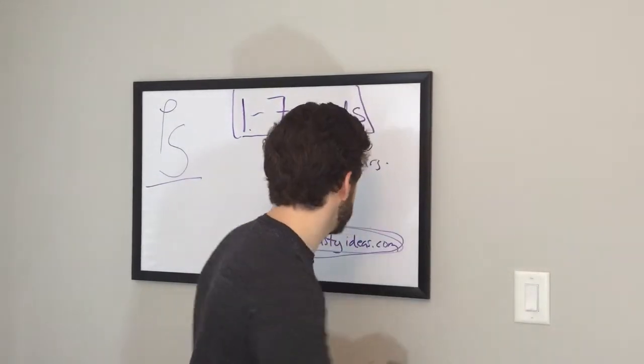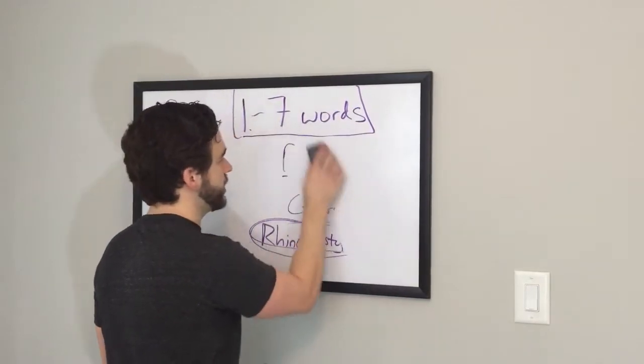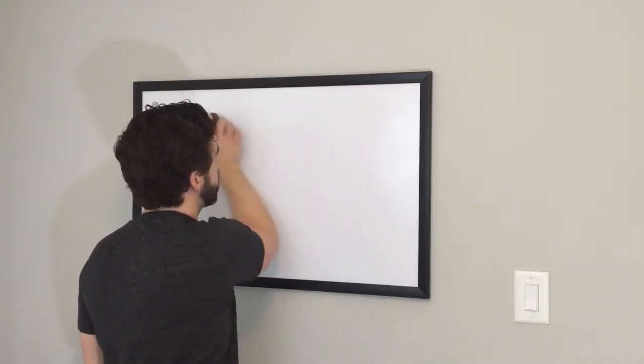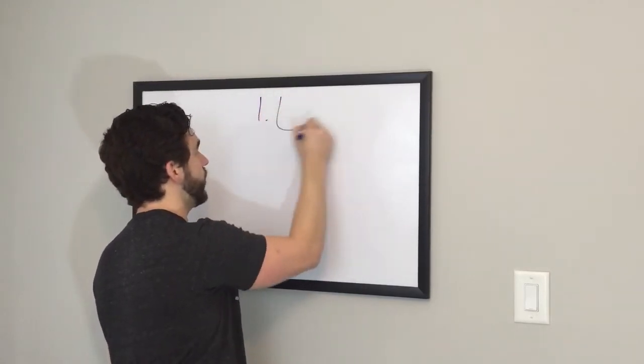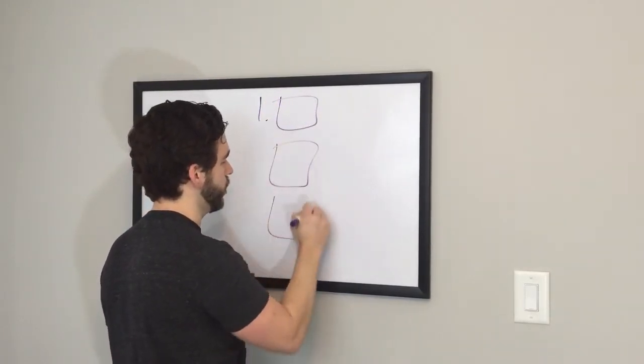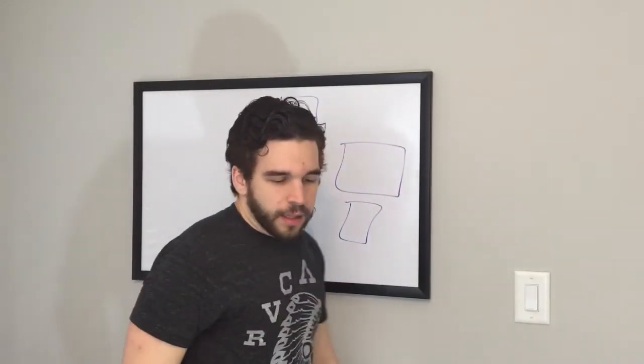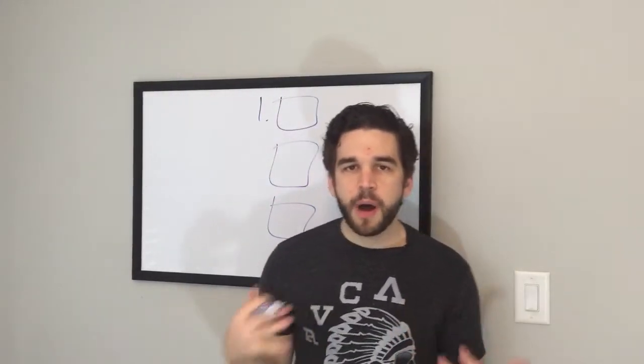Second thing to do is test your billboard. And this is how you do that. My advice would be to create five variations of what you think your billboard is. So here's one variation, two, three, four, five.